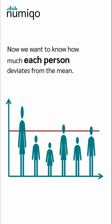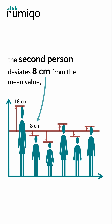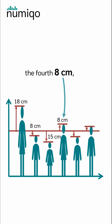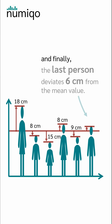Now we want to know how much each person deviates from the mean. The first person deviates 18 cm from the mean value. The second person deviates 8 cm. The third 15 cm. The fourth 8 cm. The fifth 9 cm. And finally, the last person deviates 6 cm from the mean value.